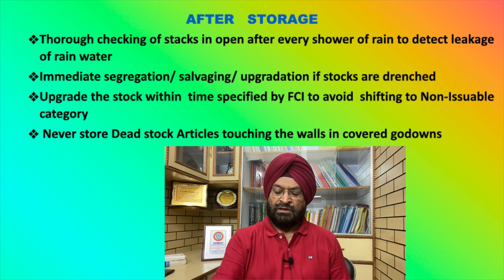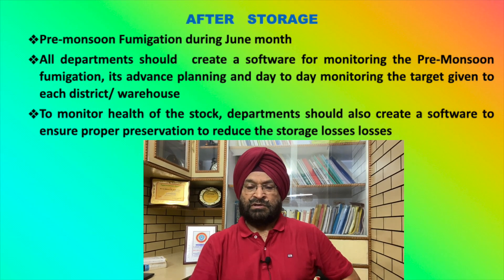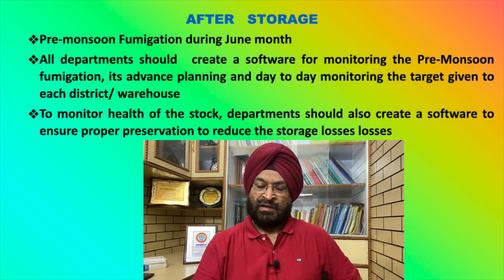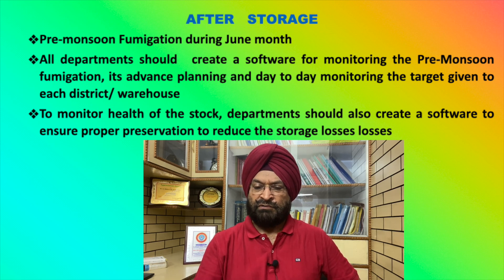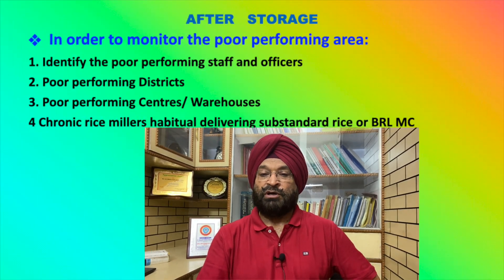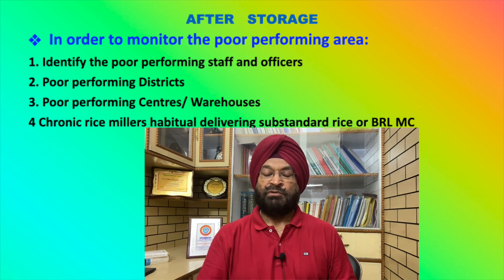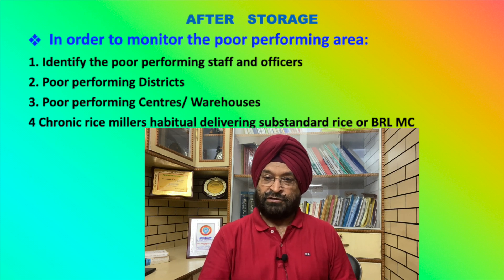Never store red-category stock articles adjoining walls in the godown, as you cannot fumigate or separate them properly. Pre-monsoon fumigation is the basic first-hand treatment, to be carried out during the month of June. All departments are required to develop software to monitor pre-monsoon fumigation on a day-to-day basis, with targets fixed district-wise, center-wise, and depot-wise so that the exercise can be finished from 1st June to 30th June. Identify poor-performing areas, staff, and officials.